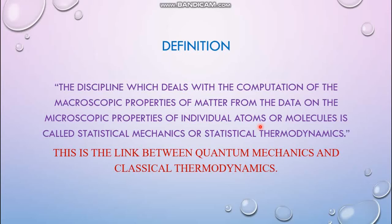Suppose you have to find the temperature of a system. How does the temperature of the system constitute? It is actually the external manifestation of the overall vibrational energy, rotational energy, and translational energy of the molecules. These microscopic properties of individual atoms or molecules constitute the macroscopic property. If you collect all this data and compute the macroscopic property — that is the temperature — this overall study is known as statistical thermodynamics.